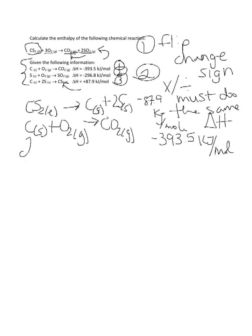Alright, multiplying the whole thing by 2. So we have 2 solid sulfurs plus 2 oxygen gases, giving us 2 SO2 gas. Now because we multiplied this whole equation by 2, we must also multiply our enthalpy by 2. So we have negative 296.8 times 2 gives us negative 593.6 kilojoules per mole.